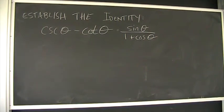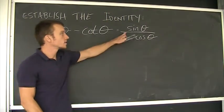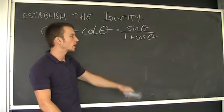Alright, establish the following identity: cosecant of theta minus the cotangent of theta equals sine theta over 1 plus cosine theta.